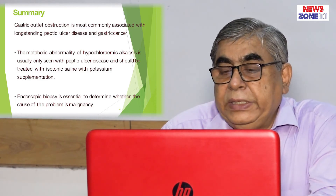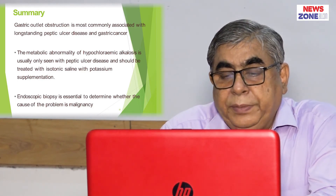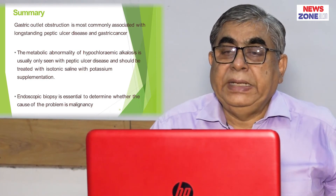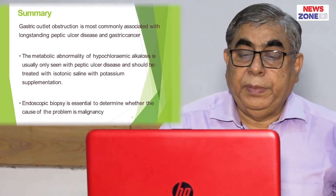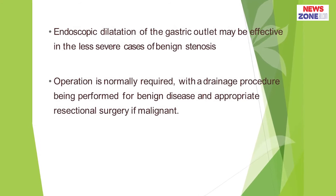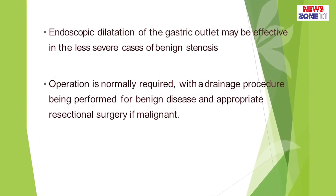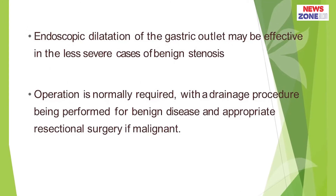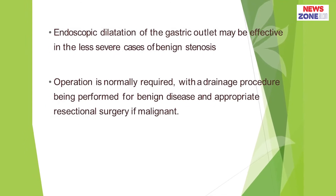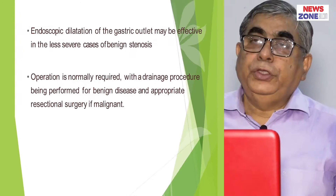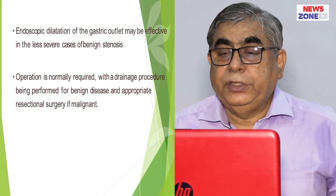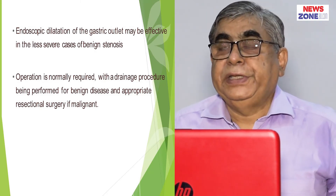Endoscopic biopsy is essential to determine whether the cause of the problem is malignancy, so that we can exclude malignancy by means of endoscopy. Sometimes endoscopic dilatation of the gastric pylorus may relieve some outlet obstruction. An operation is normally required, with a drainage procedure being performed for benign disease and appropriate resectional surgery for malignant cases. For benign cases, you have to perform an adequate drainage procedure for the patient's benefit.